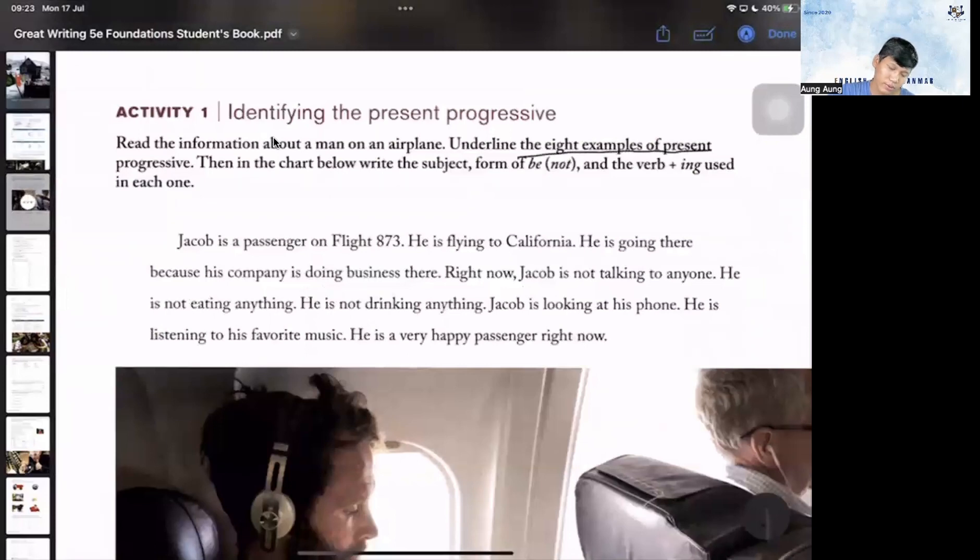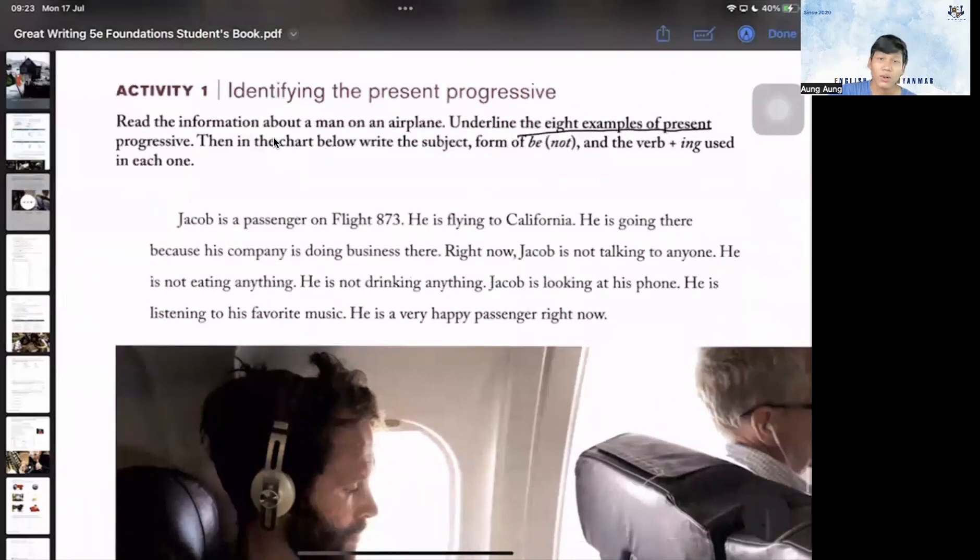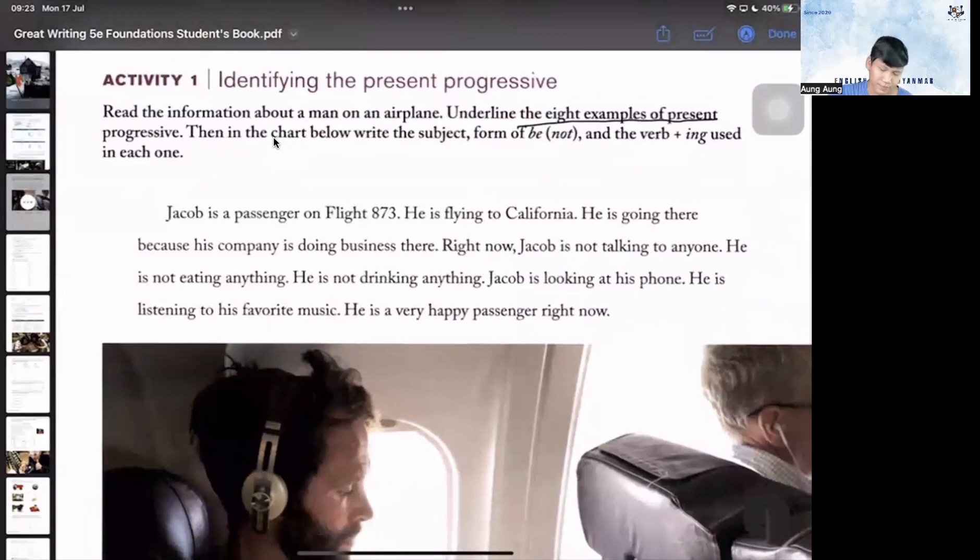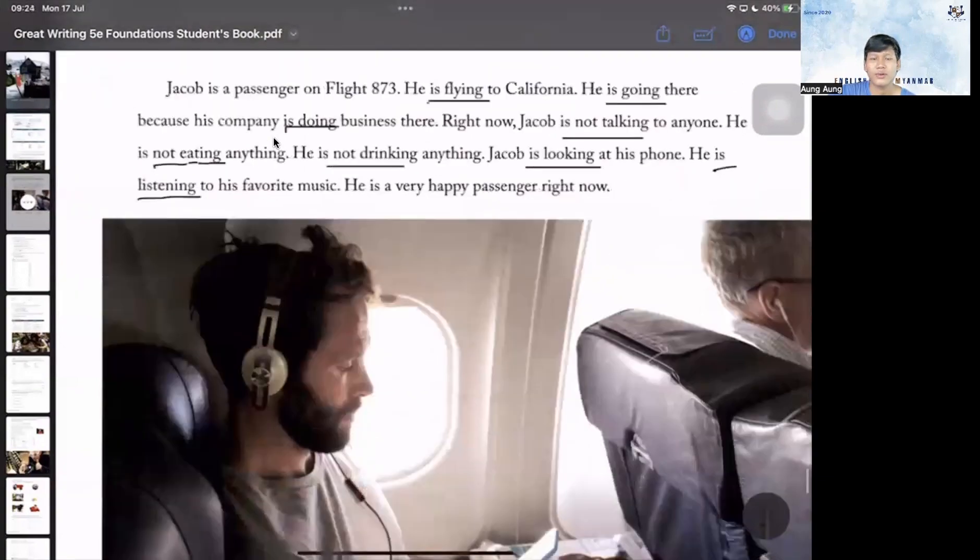Underline eight examples of present progressive. Jacob is a passenger on flight 837. He is flying to California. He is going there because his company is doing business. Right now Jacob is not talking to anyone. He is not eating anything, he's not drinking anything. Jacob is looking at his phone and he is listening to his favorite music. He is a very happy passenger right now. This is the present progressive example.